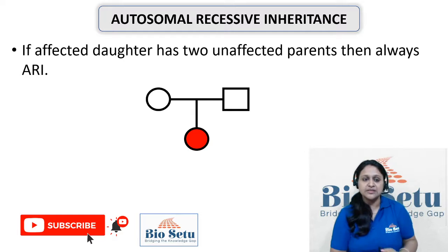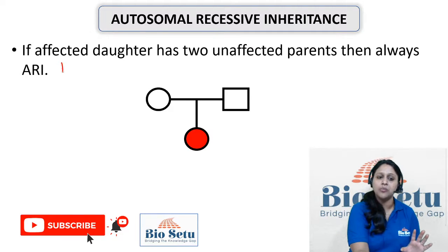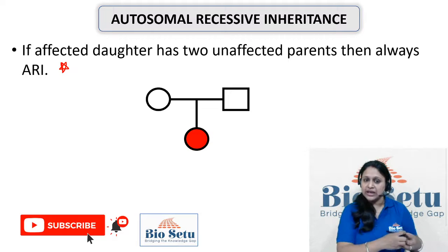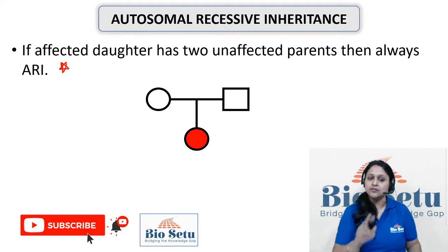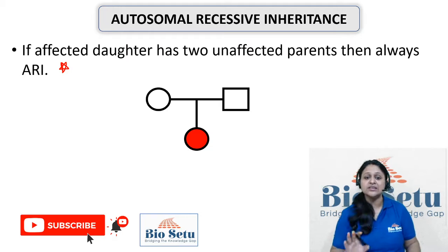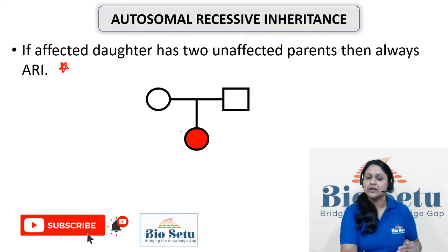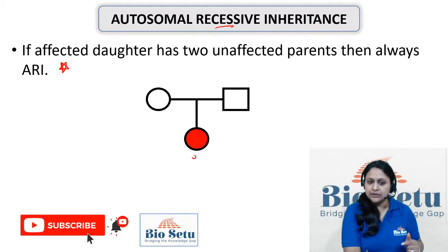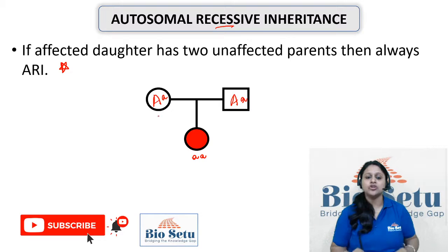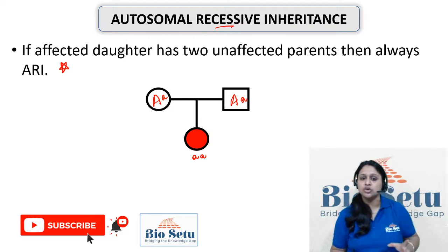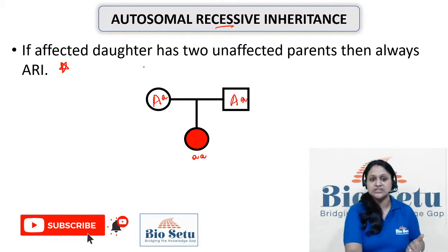The next important point: if an affected daughter has two unaffected parents, it is always Autosomal Recessive Inheritance and cannot be X-linked Recessive. This is a very important point — if you see in a pedigree an affected daughter whose parents are both unaffected, this confirms Autosomal Recessive Inheritance.